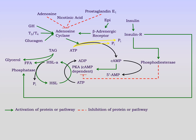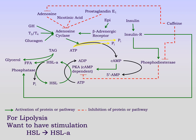Other hormones that can inhibit include prostaglandin E, adenosine, and nicotinic acid, which all block the adenylyl cyclase activation that epinephrine, growth hormone, thyroid hormones, or glucagon are stimulating. Caffeine is an ergogenic aid that also has effects here: it acts agonistically with epinephrine, stimulating additional beta-adrenergic responses, and blocks phosphodiesterase and adenosine function, thereby accentuating hormone-sensitive lipase activity and lipolysis.